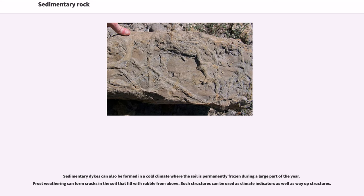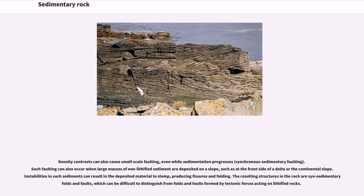The same process can form mud volcanoes on the surface. Sedimentary dikes can also be formed in a cold climate where the soil is permanently frozen during a large part of the year. Frost weathering can form cracks in the soil that fill with rubble from above. Density contrasts can also cause small-scale faulting, even while sedimentation progresses. Such faulting can also occur when large masses of non-lithified sediment are deposited on a slope, causing instabilities that result in the deposited material slumping, producing fissures and folding. The resulting structures can be difficult to distinguish from folds and faults formed by tectonic forces acting on lithified rocks.